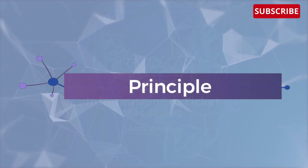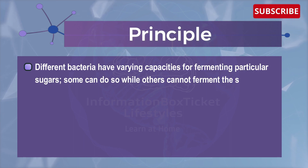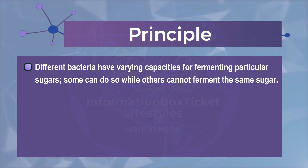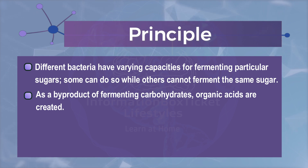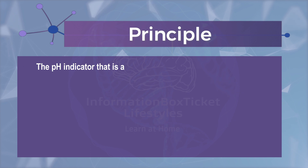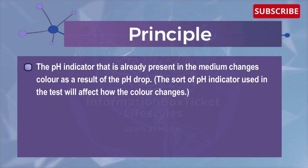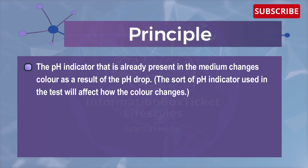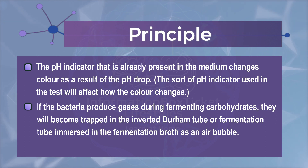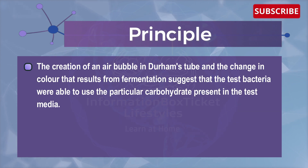Let's learn the principle of the carbohydrate fermentation test. Different bacteria have varying capacities for fermenting particular sugars — some can do so while others cannot ferment the same sugar. As a by-product of fermenting carbohydrates, organic acids are created. The pH of the medium will drop as a result of these generated acids, causing the pH indicator already present in the medium to change color. If bacteria produce gases during carbohydrate fermentation, they will become trapped in an inverted Durham tube as an air bubble.